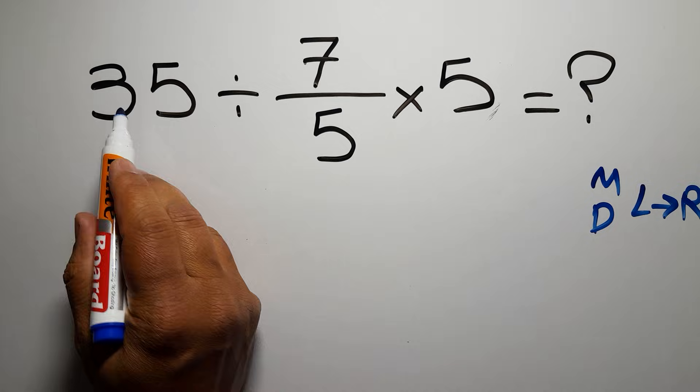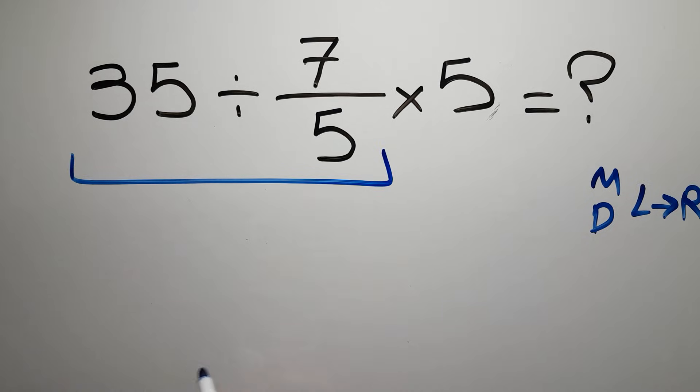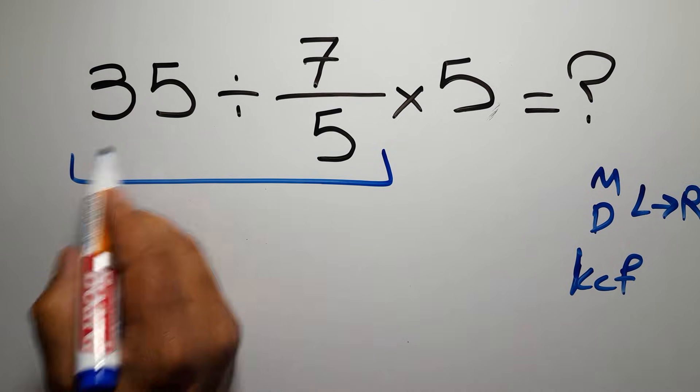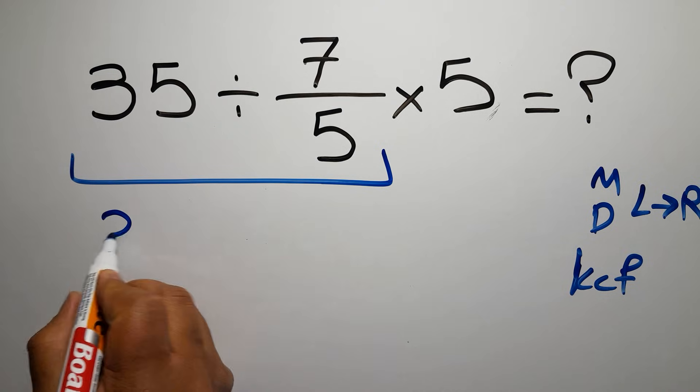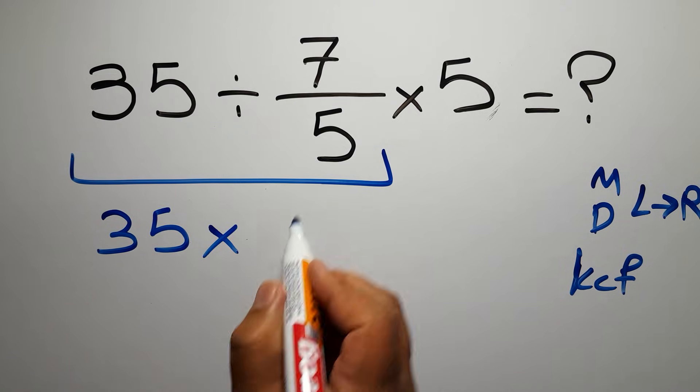Okay, so first 35 divided by 7 over 5. According to the KCF rule, K stands for keep, C stands for change, and F stands for flip. We can write: keep the first fraction, change division to multiplication, and flip the second fraction.